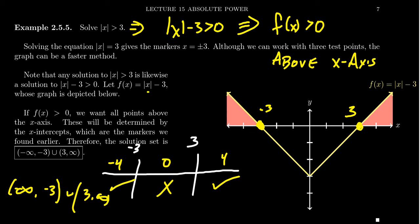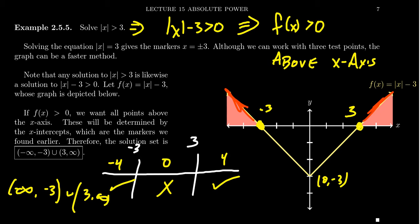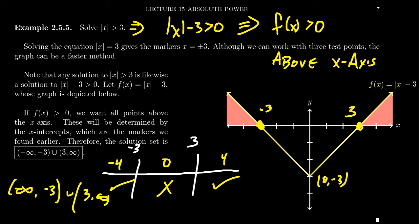If you graph f(x) equals the absolute value of x minus 3, this is a standard absolute value function with the vertex shifted down by 3, so the vertex is at (0, negative 3). It will have x-intercepts at 3 and negative 3. With a V pointing upward, where is it above the x-axis? It'll be above when you're past 3 on the right, and also to the left of negative 3. So we want x less than negative 3 or x greater than 3, giving us negative infinity to negative 3, union 3 to infinity — without any test point arithmetic.